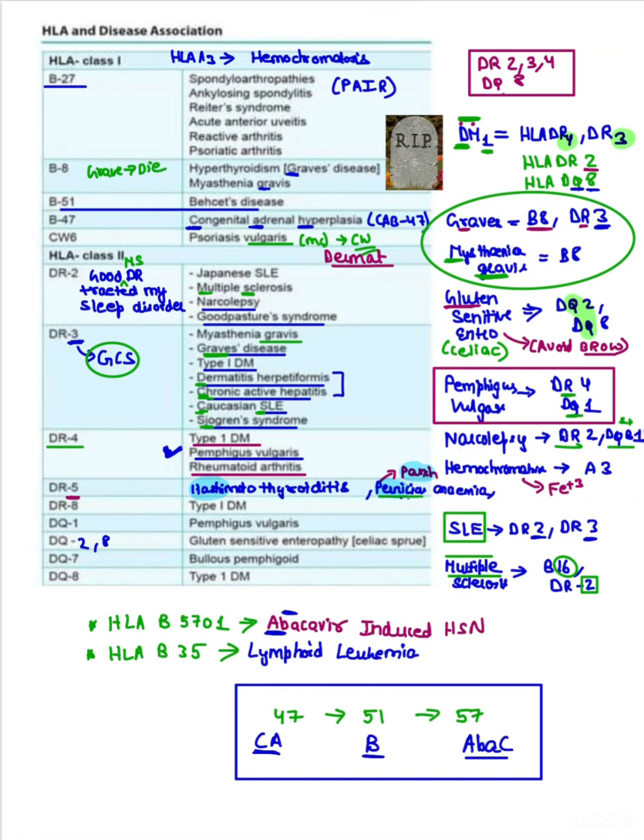Now coming to the disease association with HLA. Let's make it very easy with mnemonics. First is HLA-A3, which is hemochromatosis. Iron means Fe+3, so it is HLA-A3. Done, no confusion.